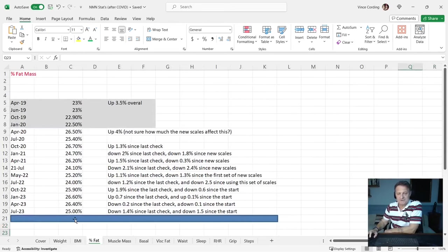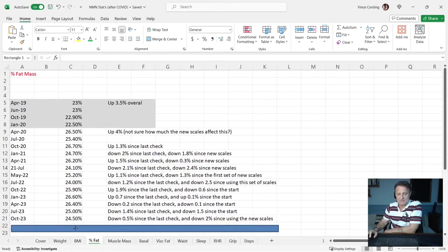Percentage body fat was 25% three months ago, it's now 24.5. So I'm down 0.5% body fat, which is good. That's what I want to be going. And it's down 2% since I started using the new scale back in April 2020. Although it's slow progress, it's progress in the right direction, which I'm extremely happy with.